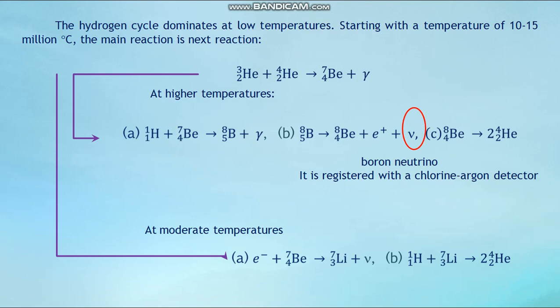The implementation of a controlled thermonuclear reaction — for which it is necessary to create and maintain a temperature of the order of 10⁸ K — is of particular interest. Since at this temperature the thermonuclear working substance is a completely ionized plasma, the problem arises of its effective thermal insulation from the walls of the working volume. It is considered that the main approach is to hold the plasma in a limited volume with strong magnetic fields of special shape.